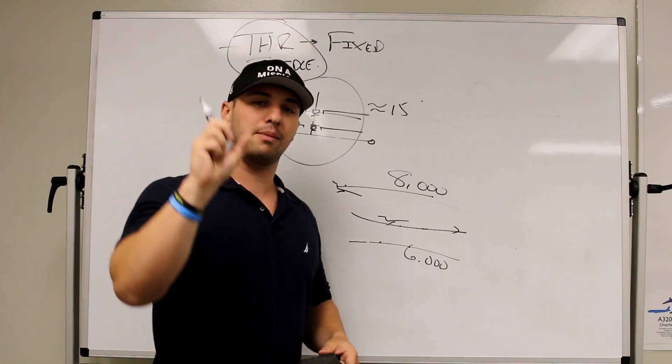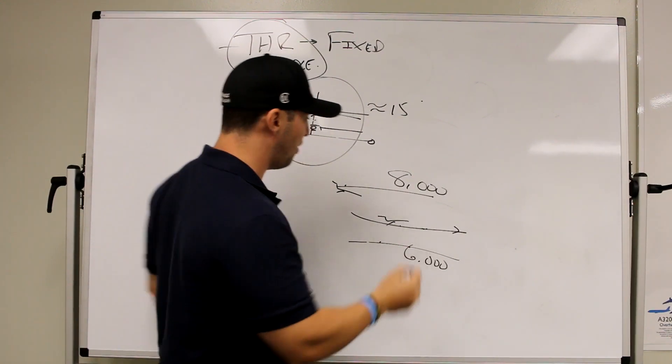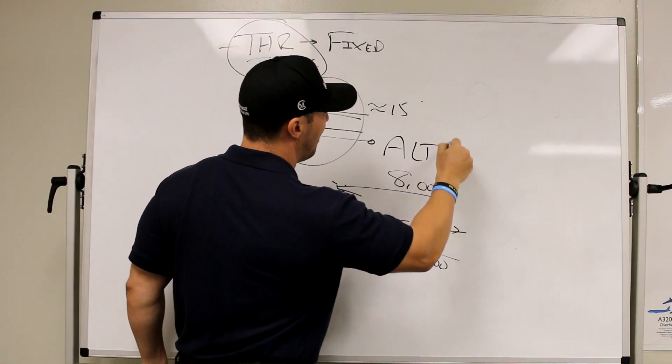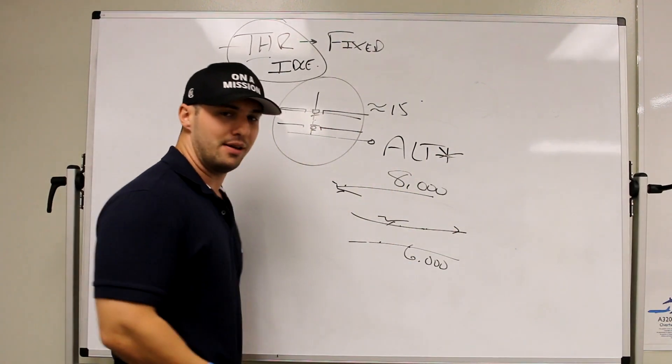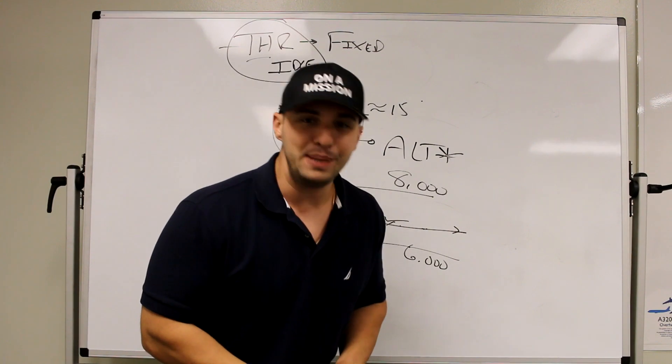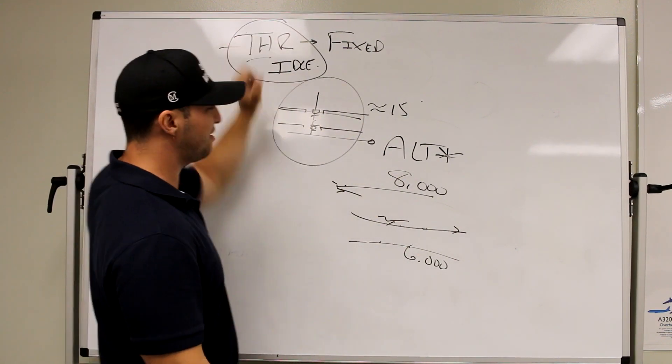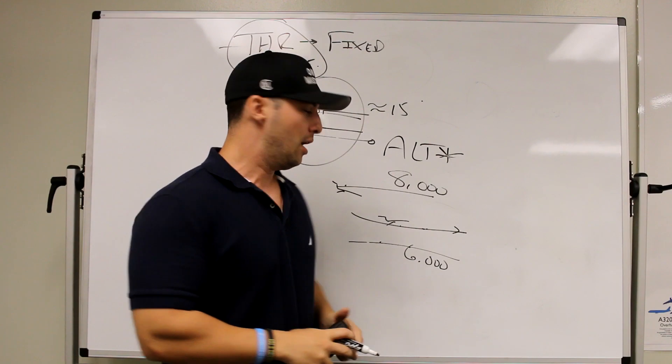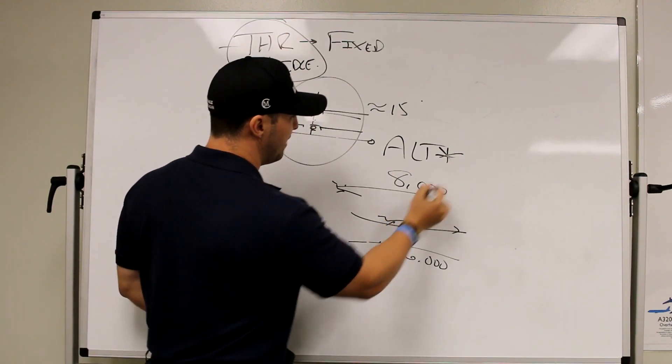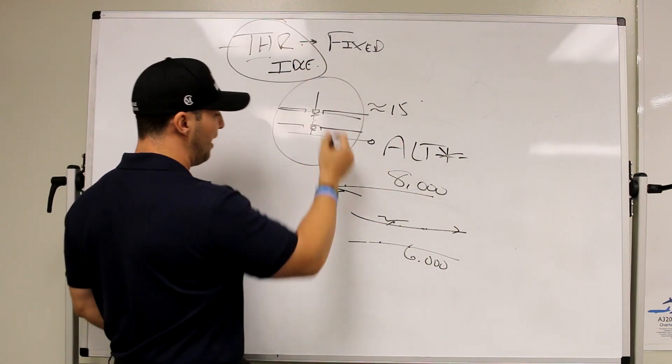So instead of reading open climb or open descent, it'll read out-star, and of course, when it reads out-star, the speed or the auto-thrust column is going to read speed. That's a variable thrust mode. But if we level prematurely and we never out-star and it stays in thrust idle...